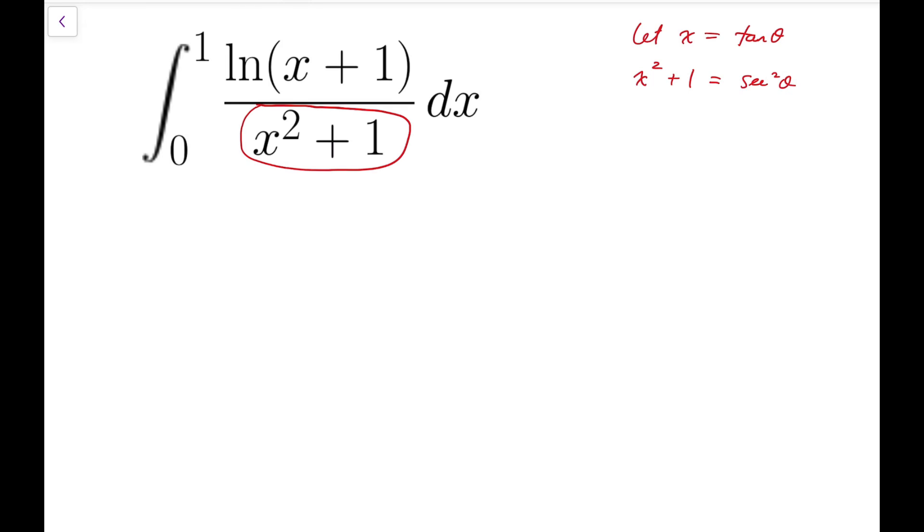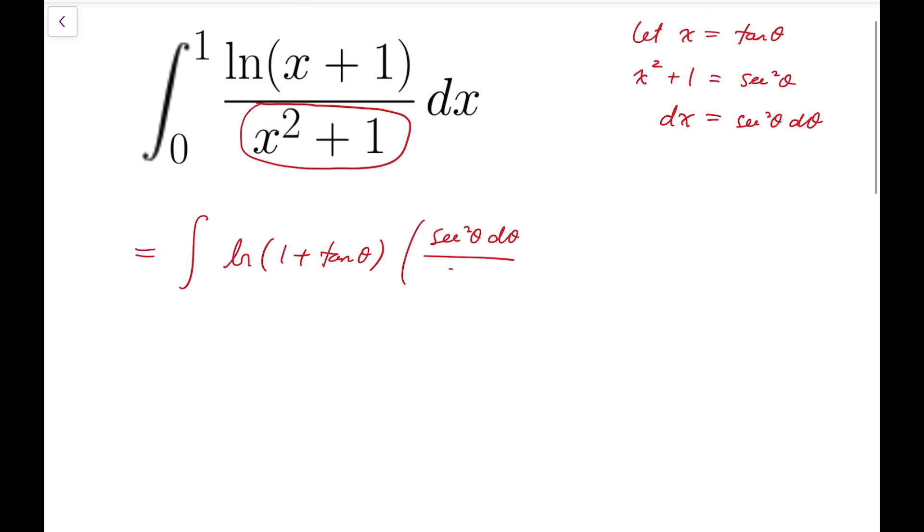Coincidentally, this is exactly the derivative of tangent theta. So dx equals secant squared theta d theta. Considering the differential of the integral, I can cancel off the secant squared theta, and so what remains would be a very simple expression. At this point, they cancel out, and what's left is simply the natural log of 1 plus tangent theta d theta.